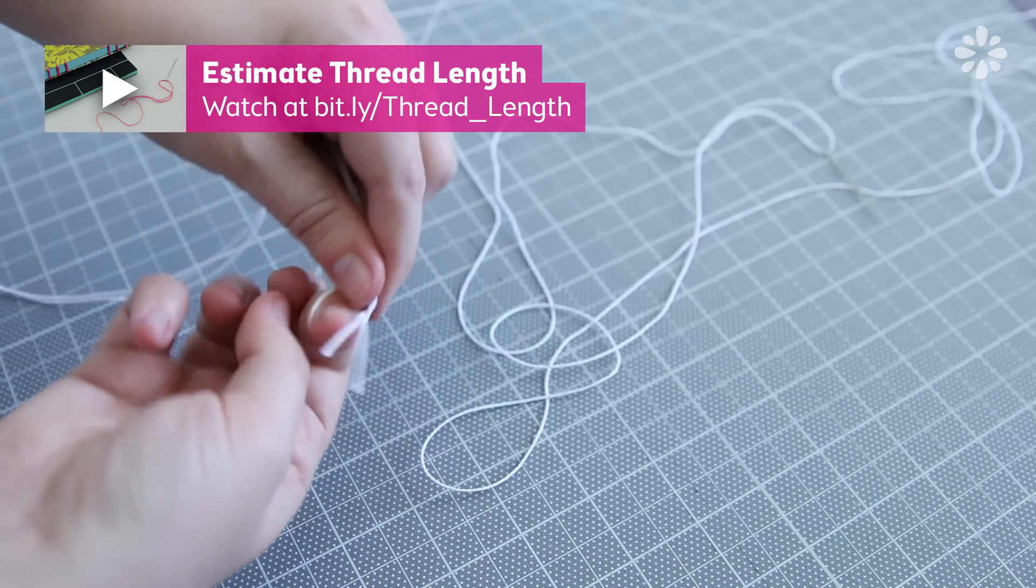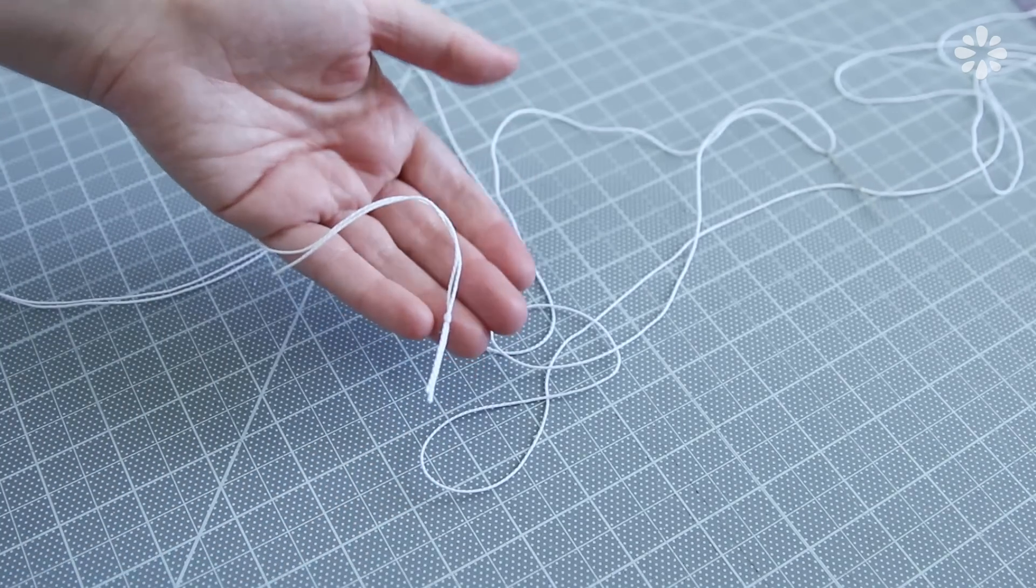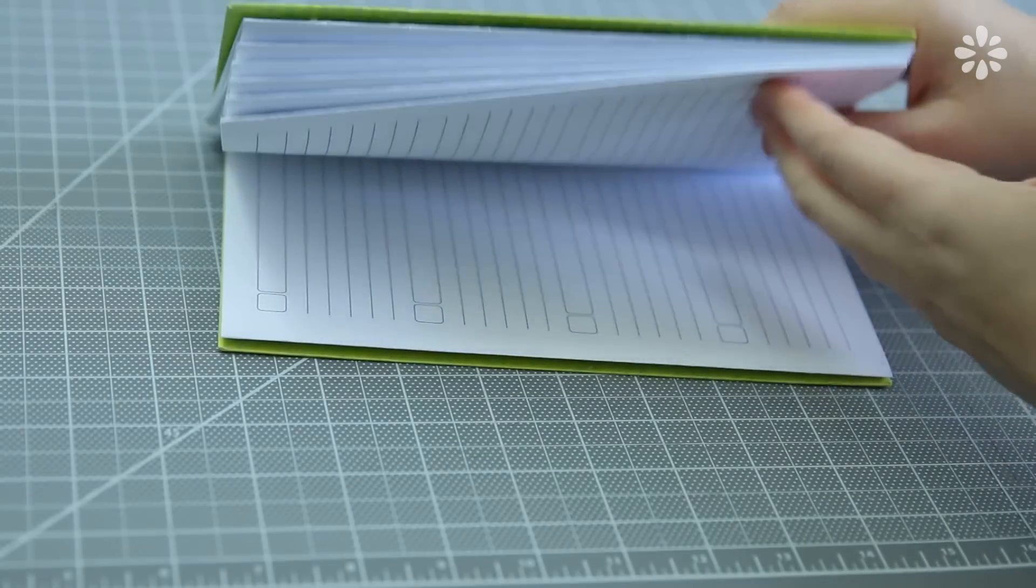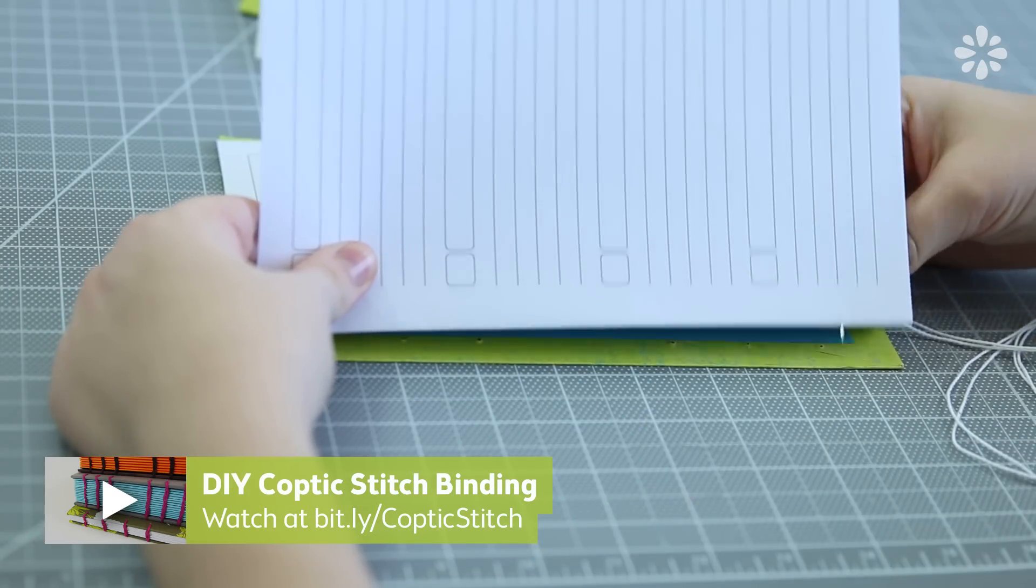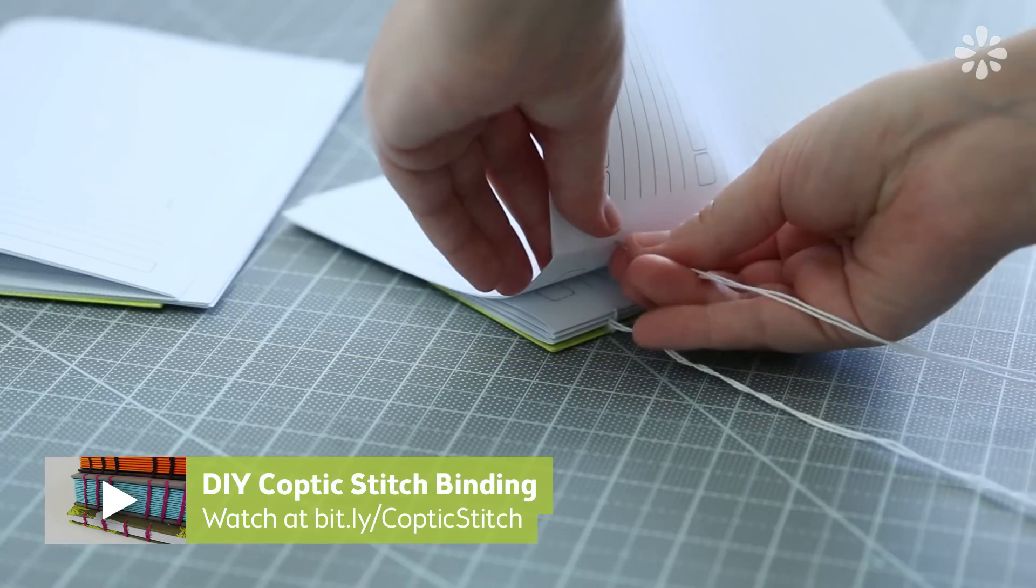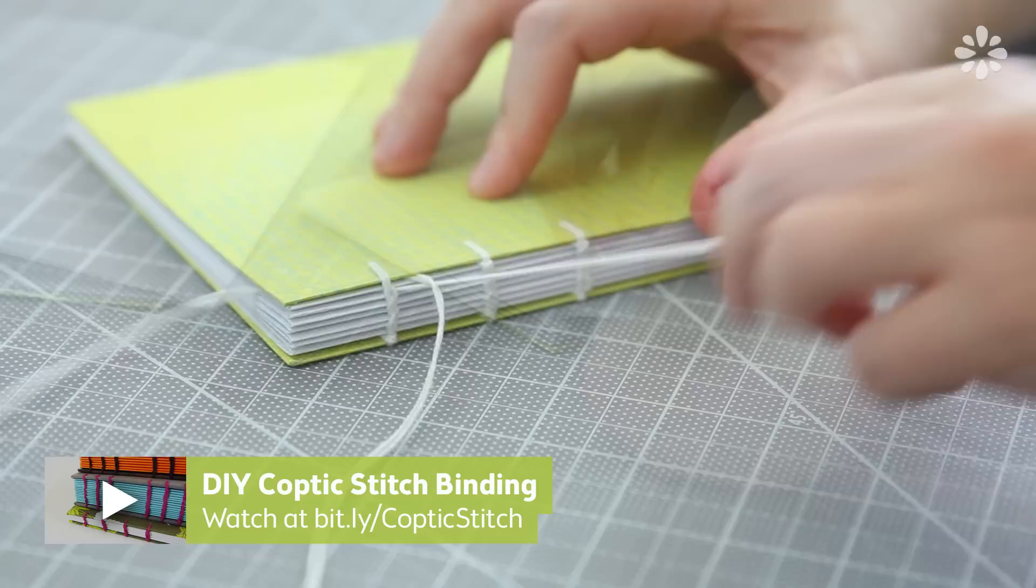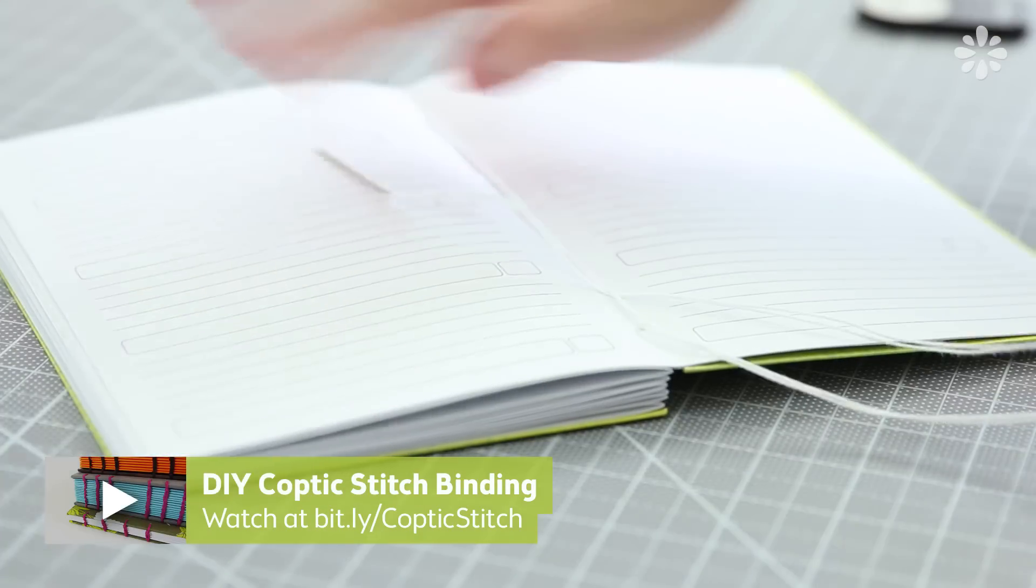I just double threaded my needle, and tied a knot on the end, and started binding with a coptic stitch method. If you're unfamiliar with this type of binding, check out this video right here, and it will go into full detail on how you can do coptic stitch step by step so that you can easily learn how to do it.